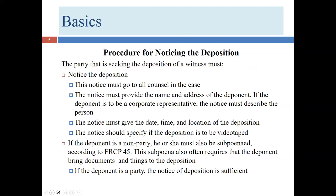A deposition is initiated by a notice of deposition. Typically this happens after you've worked out with opposing counsel — and sometimes the deponent and court reporter — when and where the deposition will occur. Sometimes you may not coordinate with opposing counsel if there's an acrimonious relationship, but more often these are handled collegially. Once details are finalized, you send out a deposition notice to all counsel and any unrepresented parties. The notice does not have to go to the actual deponent, as that person will be served a subpoena.